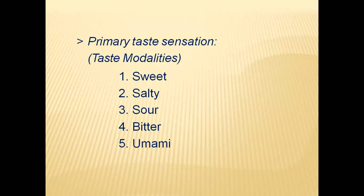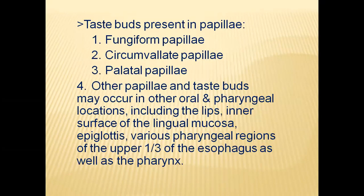The primary tastes received by taste buds are five modalities: sweet, salty, sour, bitter, and umami (meaty taste — chicken, mutton, fish). Taste buds are present in four types of papillae: fungiform papillae, circumvallate papillae, palatal papillae, and other papillae. Taste buds may occur in oral or sub-pharyngeal locations including the lips, inner surfaces of the lingual mucosa, epiglottis, pharynx, and the upper one-third of the esophagus.